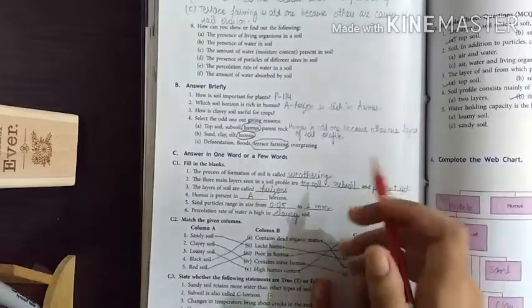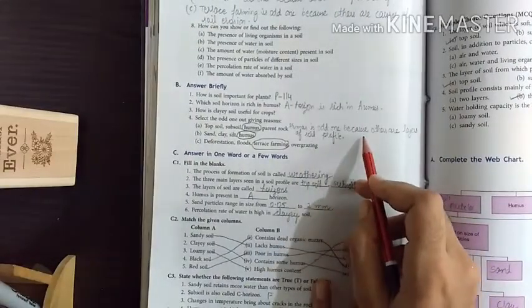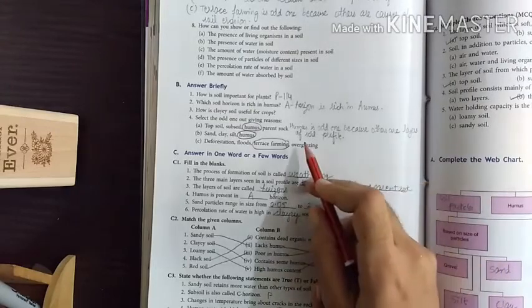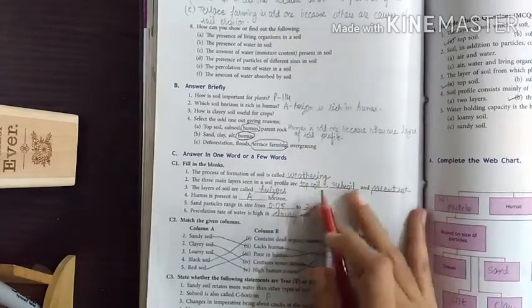Okay, clear? Humus is odd one because others are layers of soil profile.